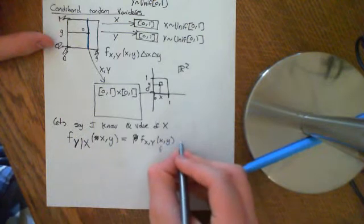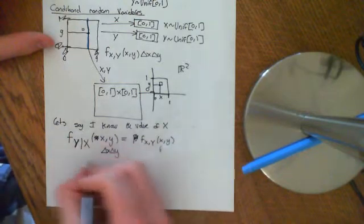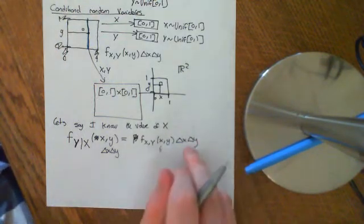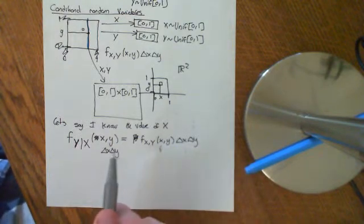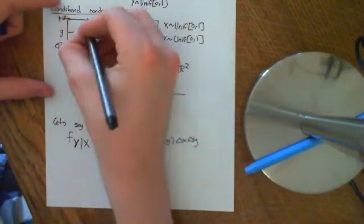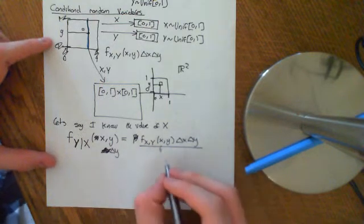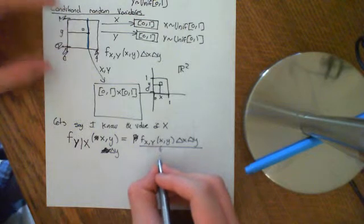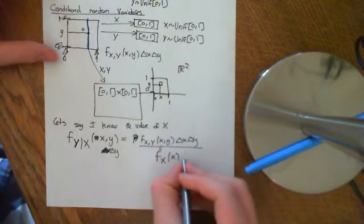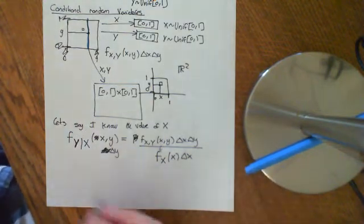To rigorize this you keep in the delta x and delta y. The probability that the point is in a tiny region delta x by delta y is the joint PDF times delta x times delta y. Since we are given the x value, only delta y is changing, so you only have delta y there. We then divide by the actual probability that you got that value x, which is the marginal distribution of X evaluated at x, times delta x. The delta x cancels, completely analogous to the rule that P(A|B) = P(A ∩ B) / P(B).